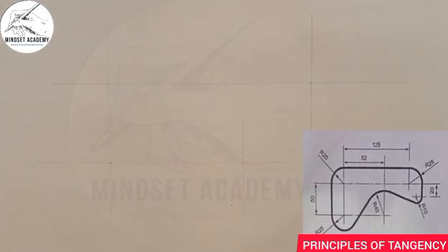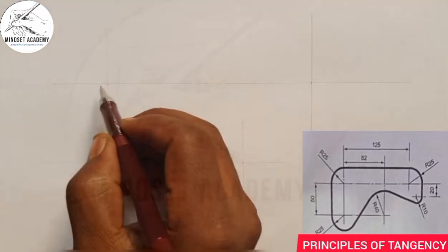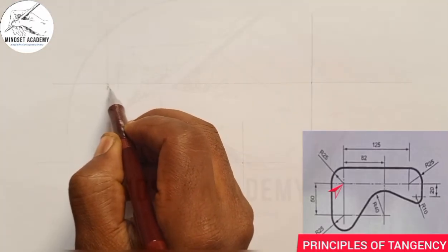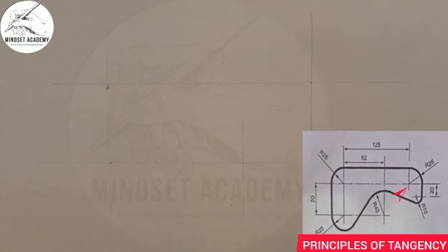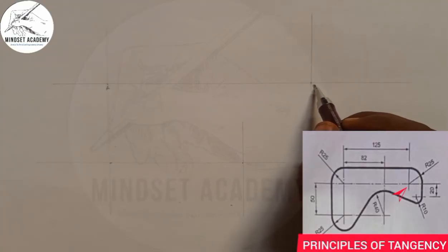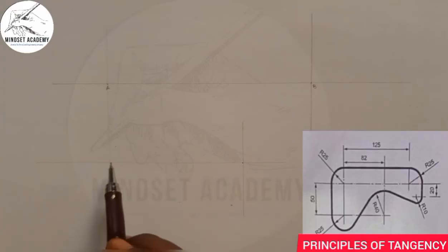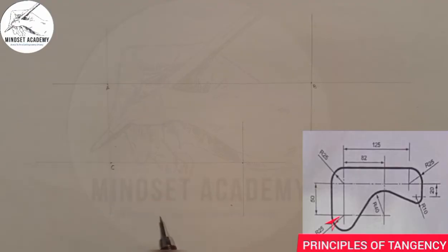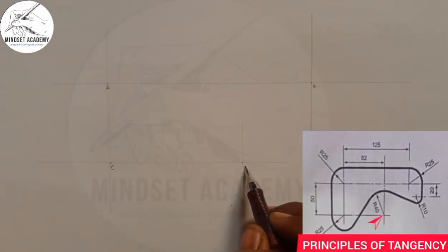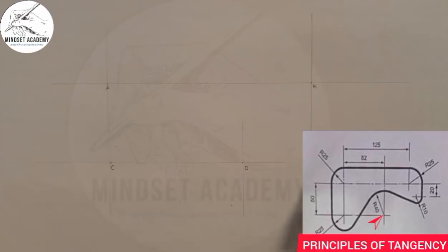Now, this point here — let me call it point A; this point here — let me call it point B; this point here — let me call it point C; and this point here — let me call it point D. I'll be coming to point A very soon. At point A, which is this point here, I have a radius of 25.